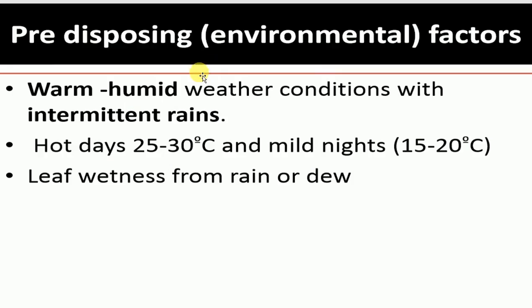Now let's look at the environmental factors required for disease development of black rust. First, warm humid weather conditions with intermittent rains. Second, hot days of 25 to 30 degrees Celsius and mild nights of 15 to 20 degrees Celsius. Third, leaf wetness from rain or dew. These three factors influence the pathogen to cause disease on the stem and leaves of the wheat plant.